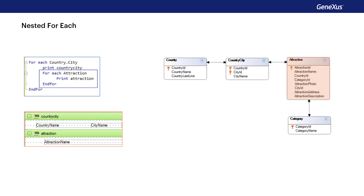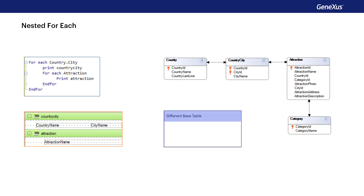The three examples of nested foreach commands that we've seen before are based on the determination of base tables. Now we'll examine them more closely. When the base tables are different, there are two possibilities: whether or not there's a direct or indirect one-to-N relationship between them.